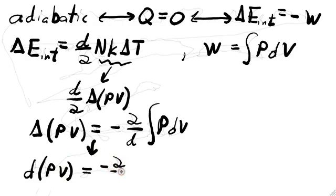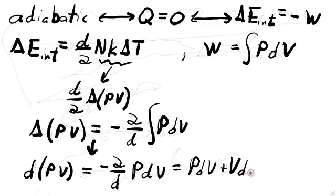So I'll change the delta to a D and write D PV, an infinitesimal change in PV, is equal to minus 2 over D times PDV, which is the infinitesimal form of the integral. Now I'm going to use the product rule on the left-hand side of the equation and write DPV as PDV plus VDP.